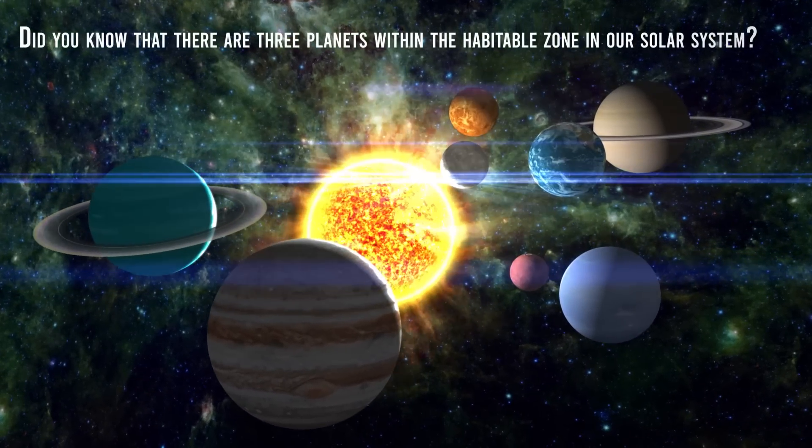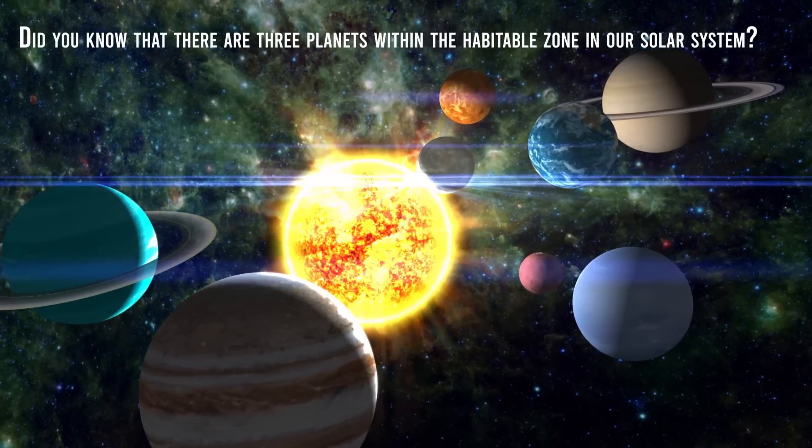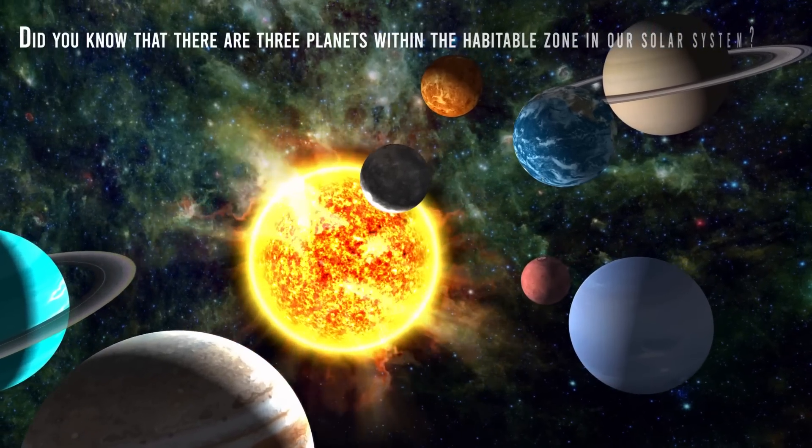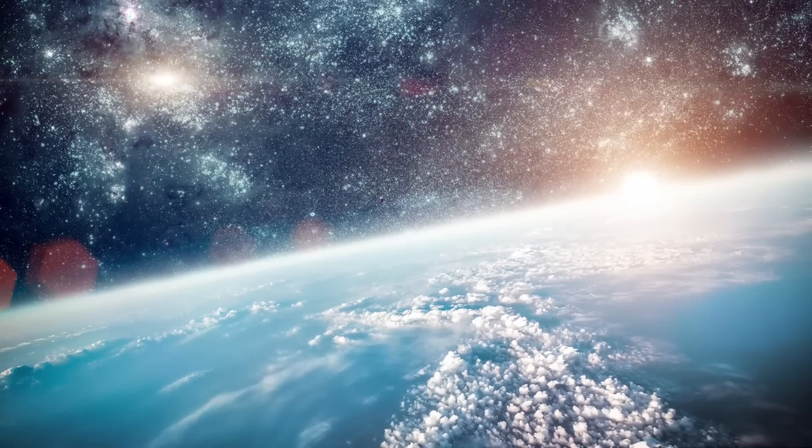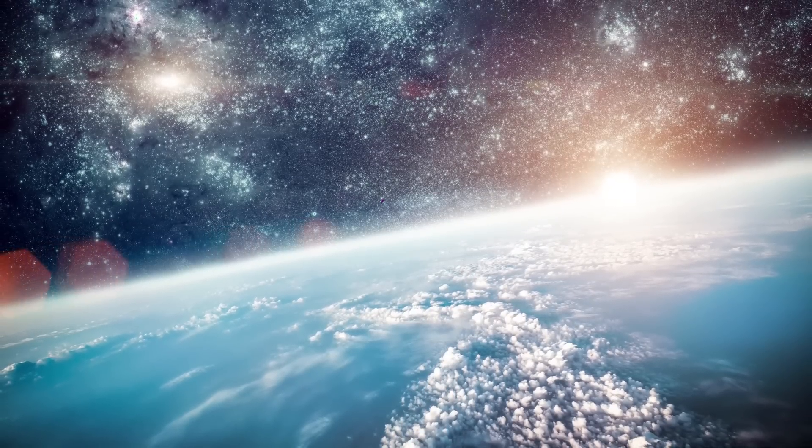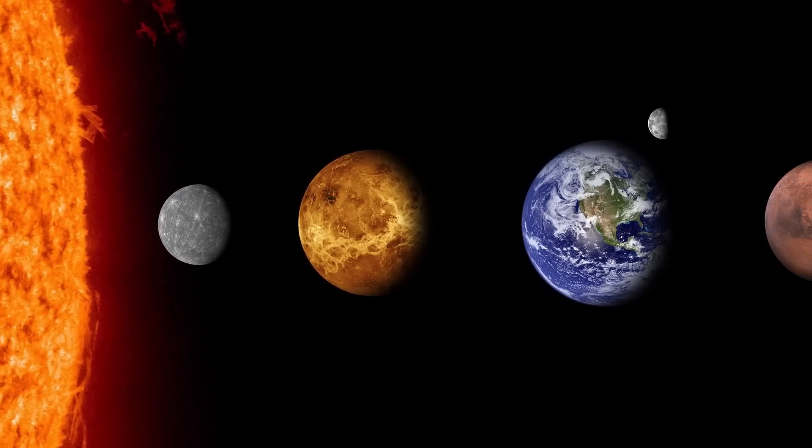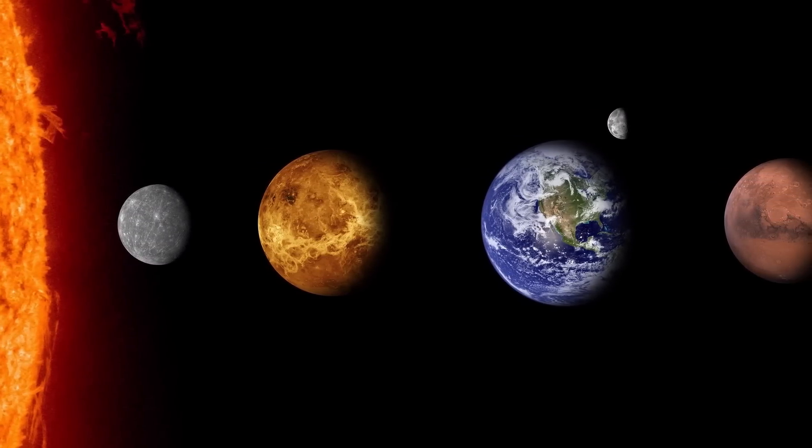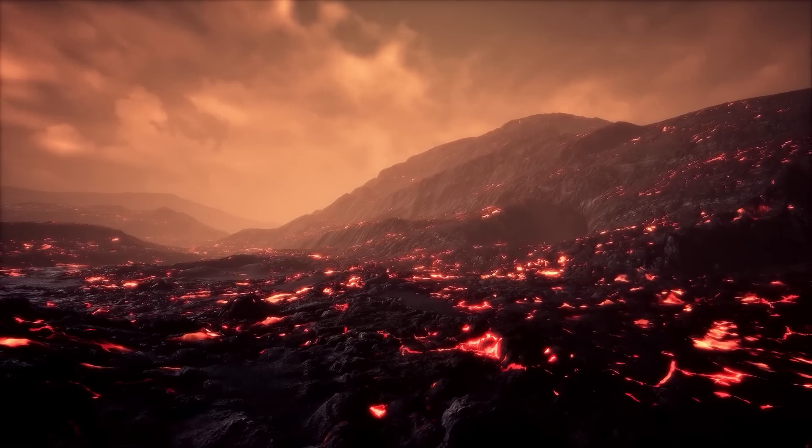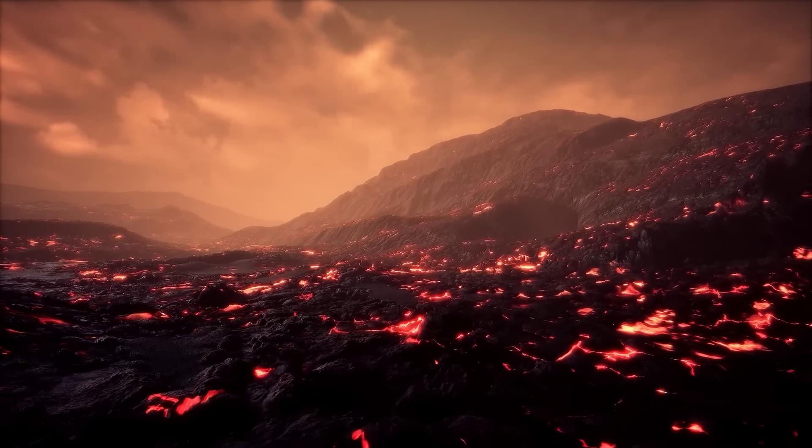Did you know that there are three planets within the habitable zone in our solar system? Yes, believe it or not, Earth is not the only planet in the habitable zone. Mars and Venus are also within this region, but if these two planets are within the habitable zone, why do neither have the necessary conditions to host living beings?